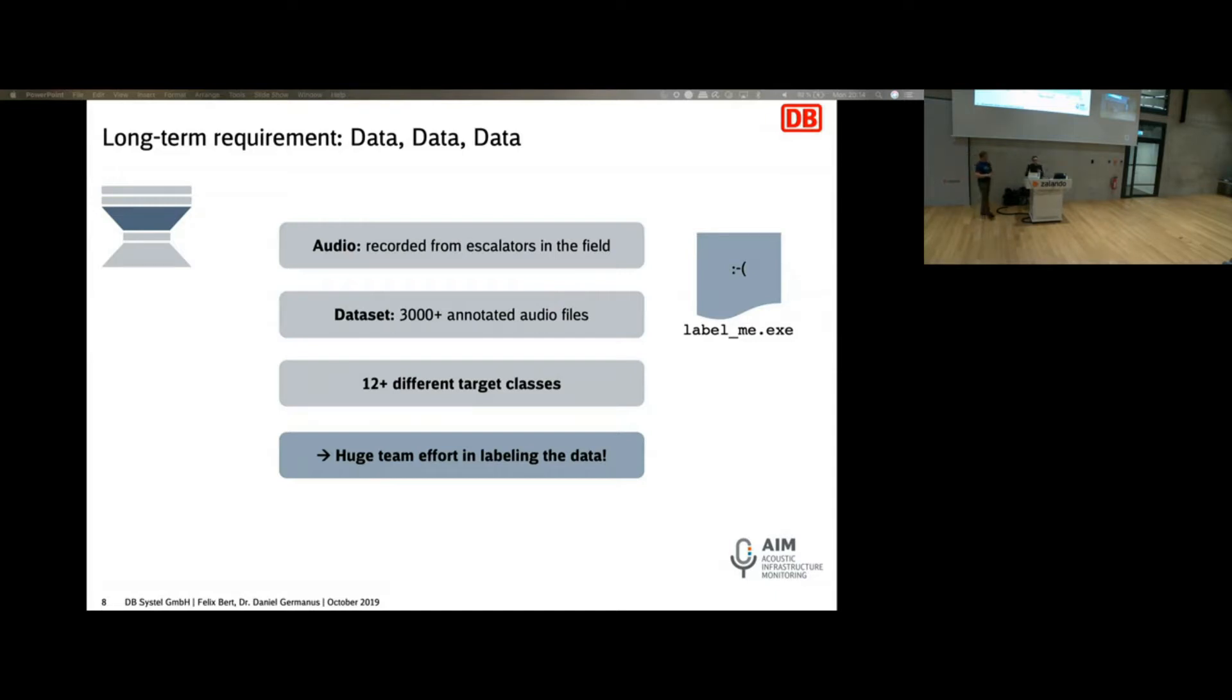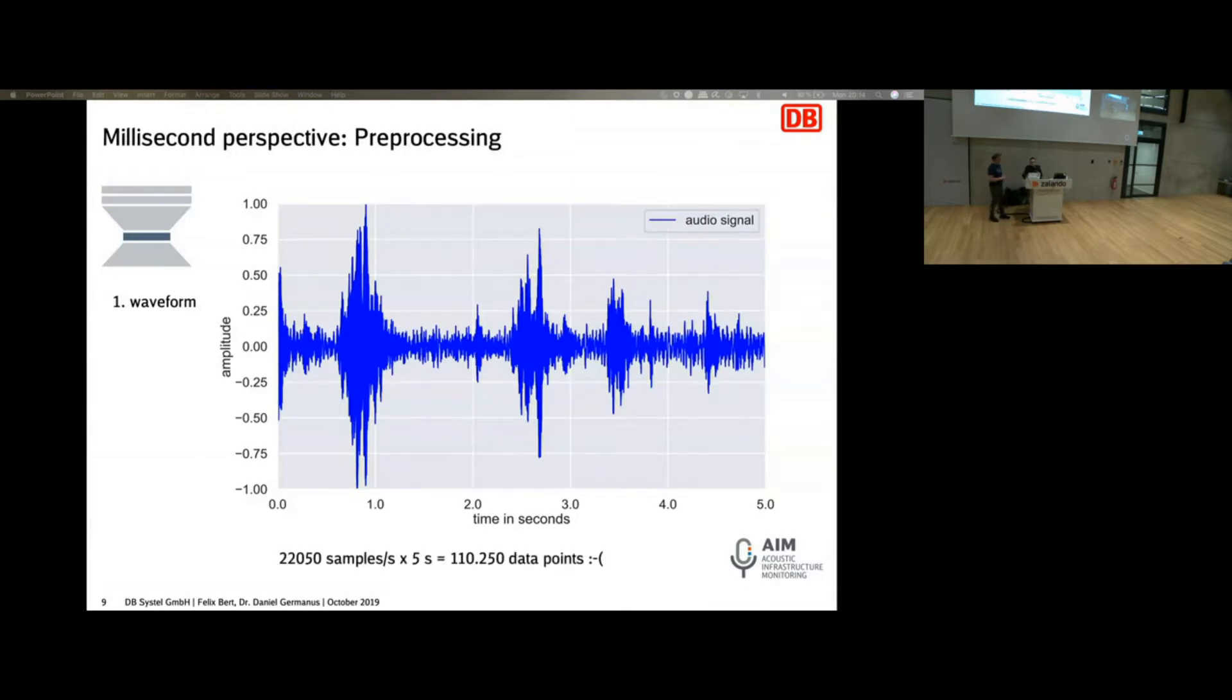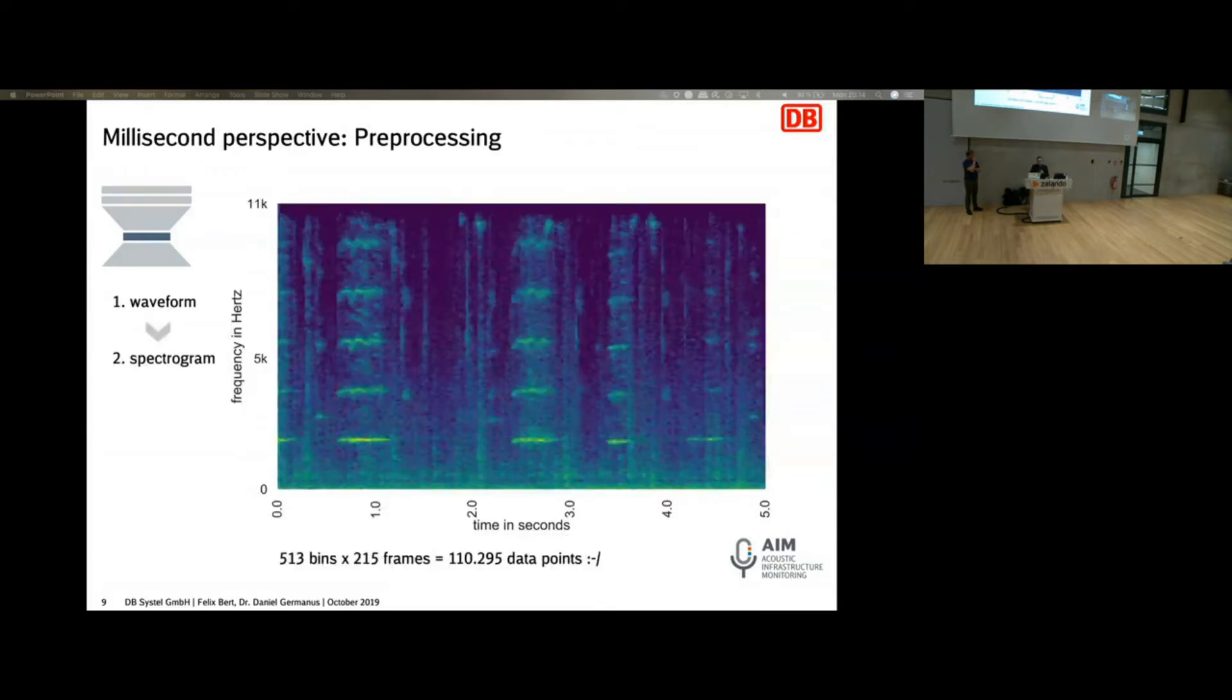So when you typically think of audio, you might see those waveforms. There are approaches in the acoustic scene classification or sound event detection where you could learn on that raw audio data, basically. But what we are doing is we want to focus on some... We have many samples. We kind of want to reduce the amount of data points that we use for learning. So what you would see oftentimes is that people do transform to a spectrogram, which is basically Fourier transform on different frames of the audio.